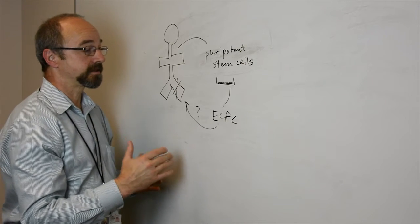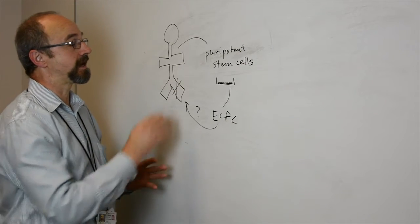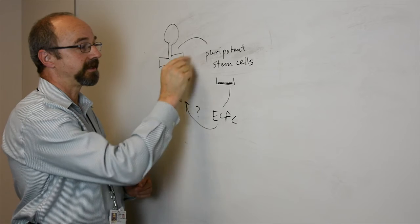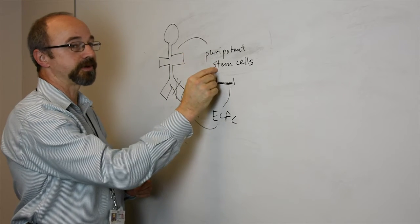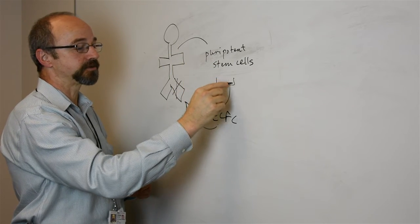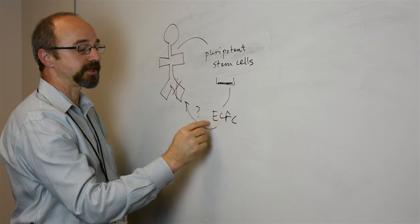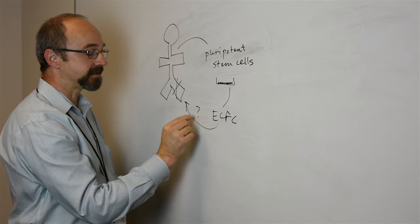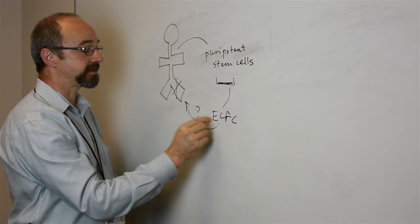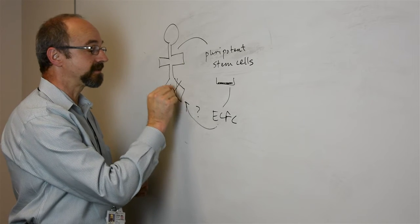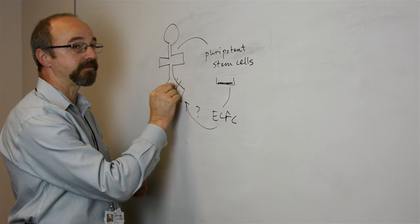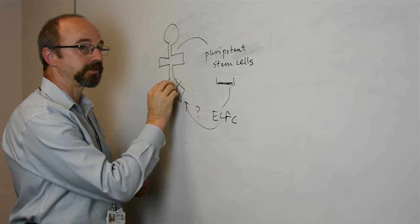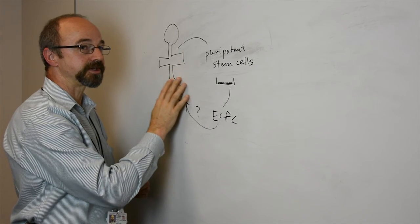We're excited to be able to now potentially take a blood sample from a patient with peripheral arterial disease, turn those cells into pluripotent stem cells, then use our novel protocol to generate the endothelial colony forming cells, and then to potentially consider a clinical trial where we could put these cells back into the areas where patients are having blood flow problems to see if these cells could form new blood vessels and improve blood flow into those tissues.